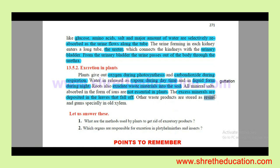Other waste products in plants are stored as resins and gums. Excess minerals are deposited in the leaves that fall off. So excretion in plants involves: oxygen released during photosynthesis, carbon dioxide during respiration, water vapor during transpiration, liquid water during the night, waste materials into the soil through roots, and excess minerals stored in falling leaves.